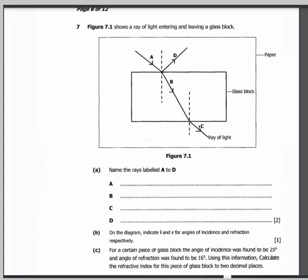A is the incident ray, B is the refracted ray, D is the reflected ray, C is the emergent ray. So we can name them.